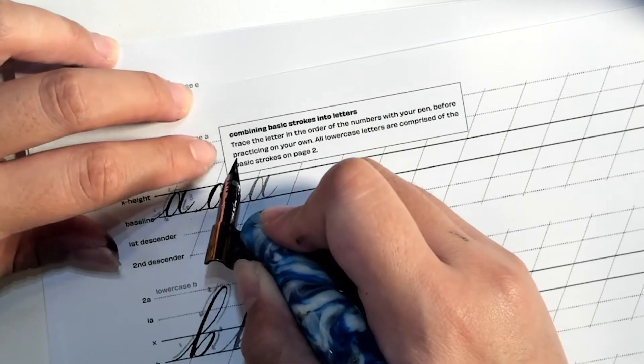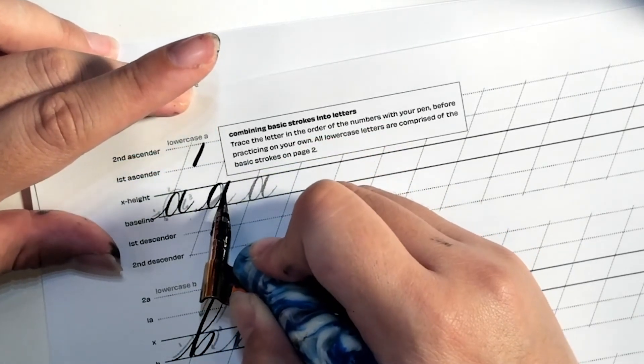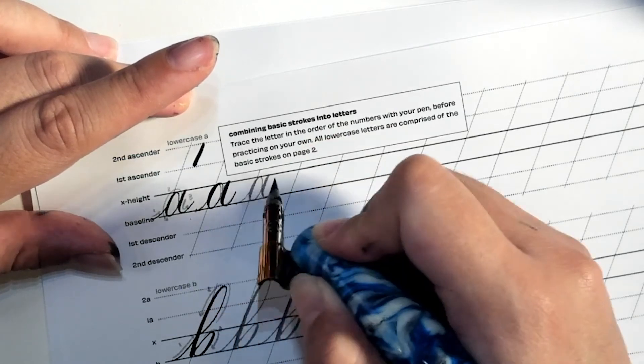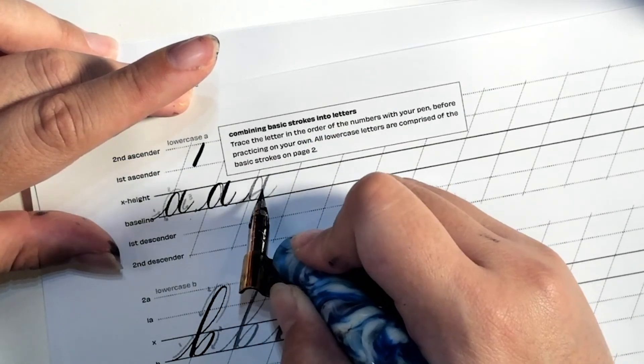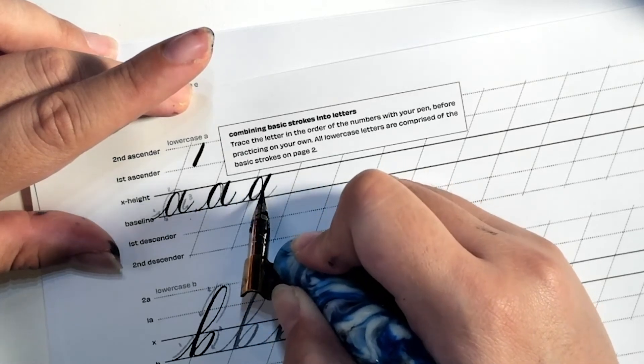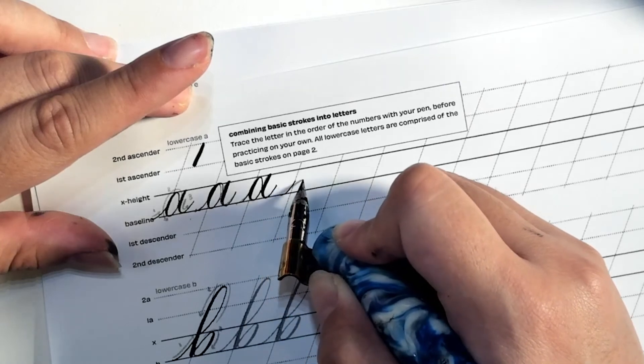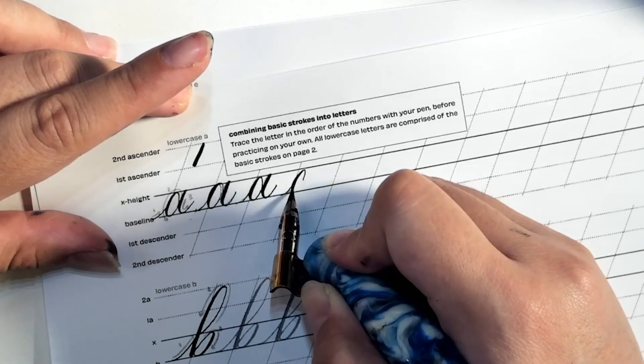Whenever you're doing something that's parallel to this line, that's when you do a heavy stroke. So trace all of these in the order. That's what those numbers are for. And you're going to go off and jump out of the nest and do it on your own and keep going.